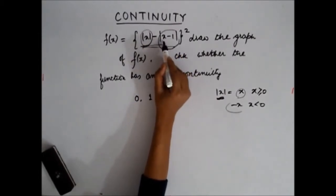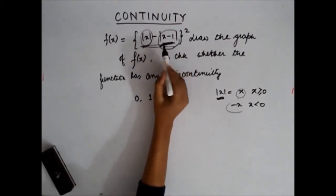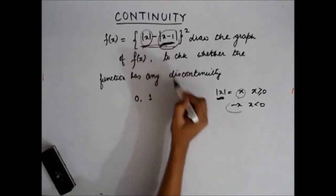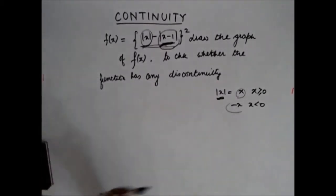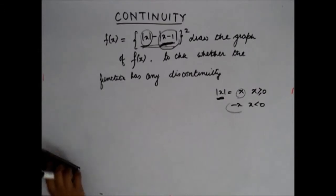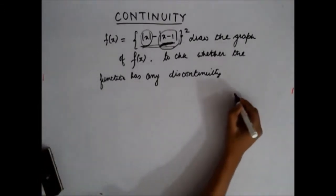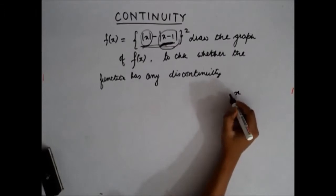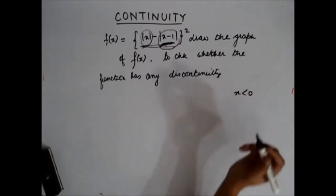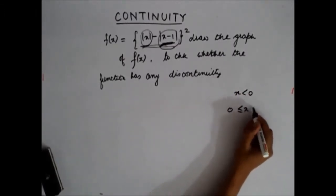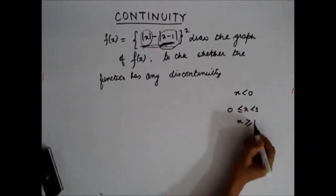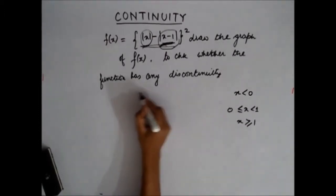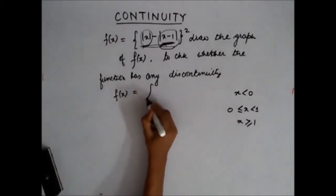If I take a value greater than 1, I write x minus 1 itself. If I take a value less than 1, I write minus of x minus 1 when getting rid of the mod sign. So I will split the function into different intervals: first interval x < 0, second interval 0 ≤ x < 1, and third interval x ≥ 1.